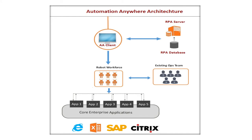This is how the Automation Anywhere architecture looks. First, we have an RPA server. This server contains our bots and manages those robots. We can upload and download our robots and store credential information to the RPA database as well.